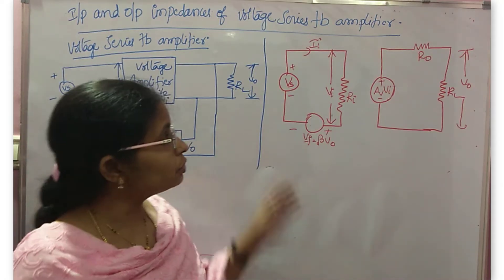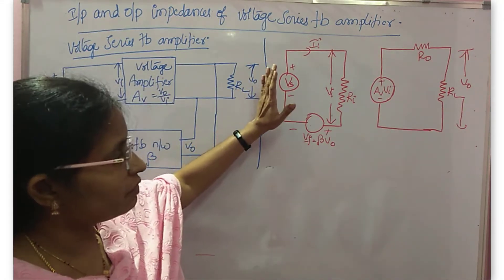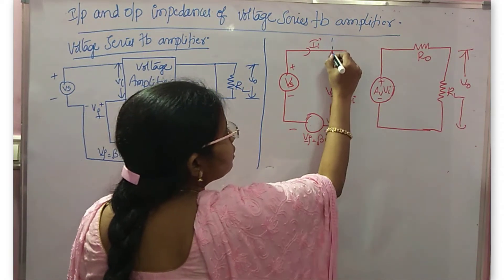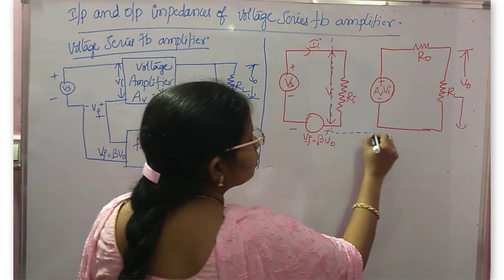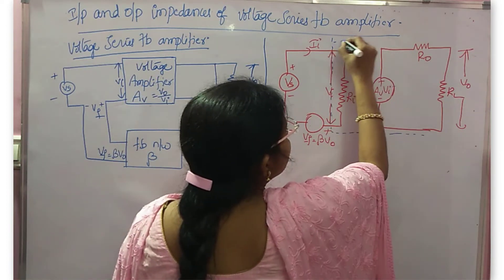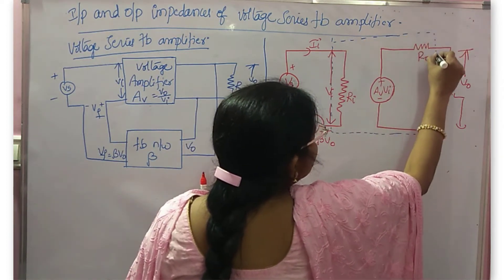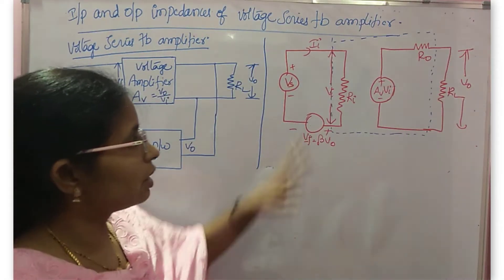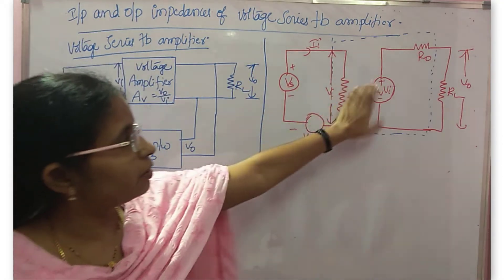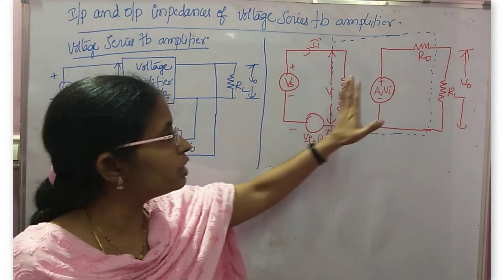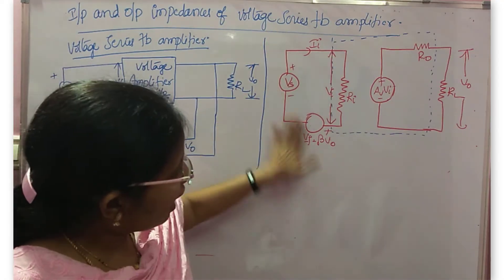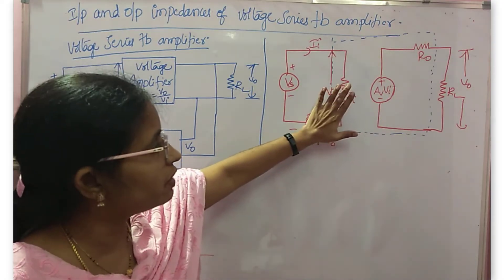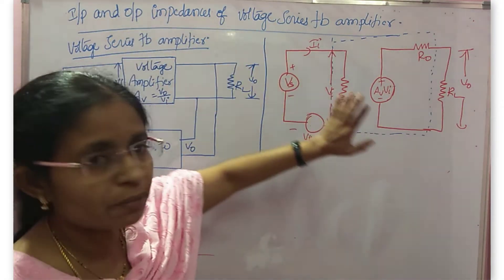This is Thevenin's equivalent circuit of your voltage series feedback amplifier. Up to this part, the dotted portion is the voltage amplifier diagram. And then after adding all these feedback things and sampling components, it becomes the Thevenin's equivalent circuit for the voltage series feedback amplifier.